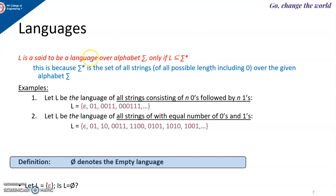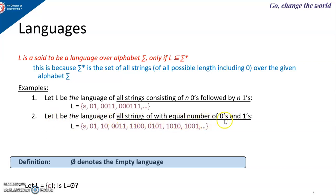For example, let L be the language of all strings consisting of n zeros followed by n ones. n could be any value. When n equals 0, no zeros or ones are produced, so the language contains epsilon. When n equals 1, we get the string 0, 1. When n equals 2, it is two zeros followed by two ones. When n equals 3, it is three zeros followed by three ones. This is a subset of sigma star and forms one language.